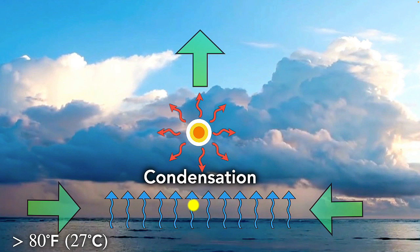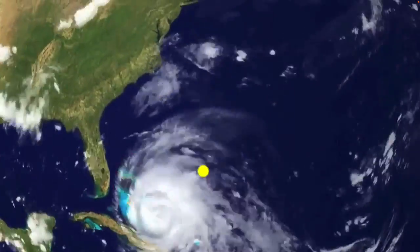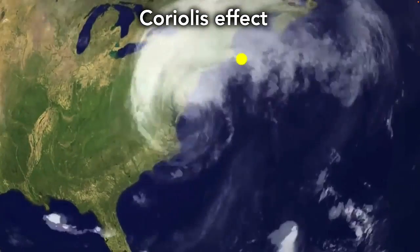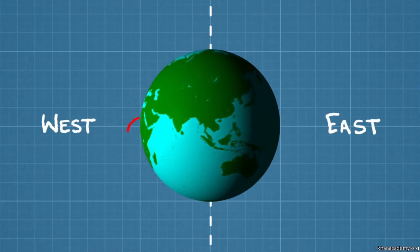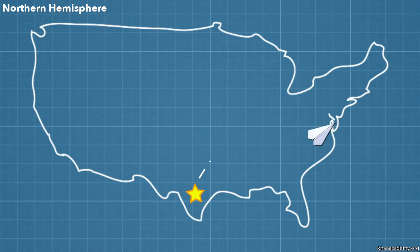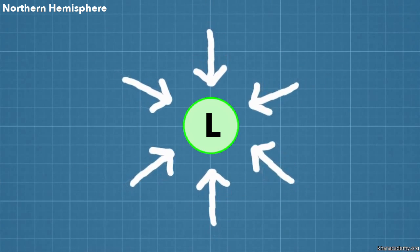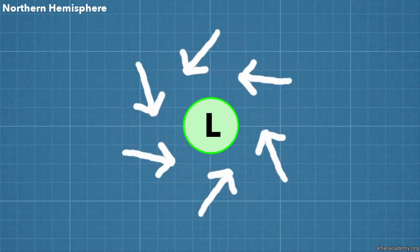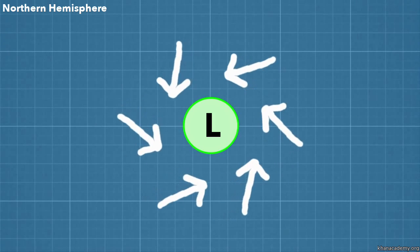But there is a twist. Because of Earth's rotation, the moving air curves, making the storm spin. This is called the Coriolis effect. In short, because Earth spins faster at the equator compared to the poles, winds in the Northern Hemisphere always deflect to the right. So as the air moves towards the low pressure center of the storm, it keeps getting deflected to the right, making it spin in the counterclockwise direction. It's Earth's rotation that makes them spin.